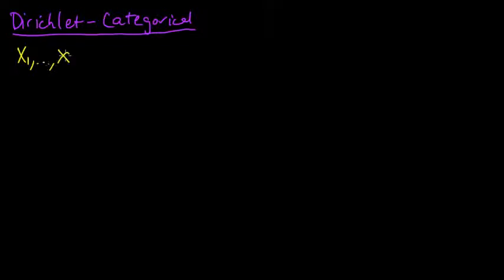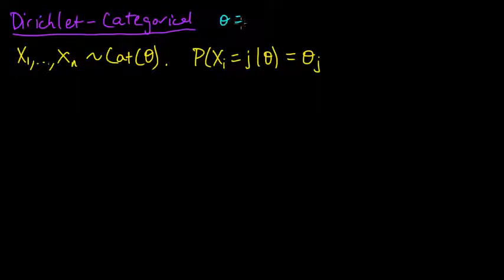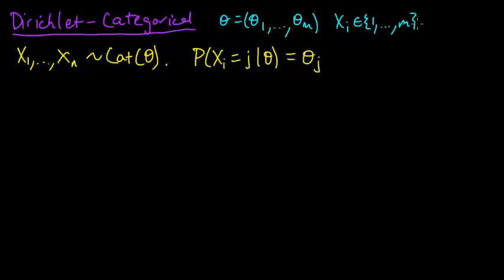In this setup we have some random variables x1 to xn, and they're distributed according to a categorical distribution with parameter theta. This just means that there's a PMF on a finite set, so that the probability that xi equals j, given parameter theta, is just theta_j. Theta is a vector; we may as well assume that the xi's take values in 1 to m. These theta_j's are the probabilities that xi takes that particular value — each is non-negative and they sum to 1. Just a little PMF.